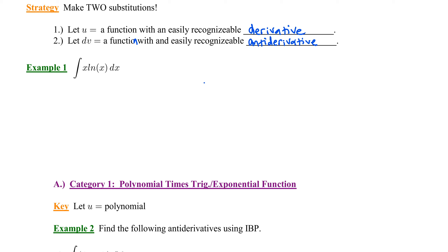Let me show you how it works. Example one: the integral of x times the natural log of x dx. The nature of the integrand is simply that it's the product of two functions of x — x times natural log of x. There's no ordinary u-substitution that would allow me to convert the integral entirely in terms of u.